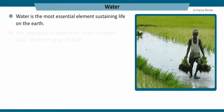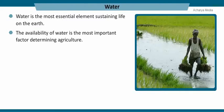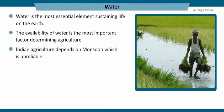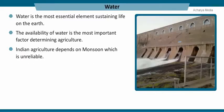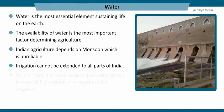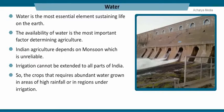Water is the most essential element sustaining life on earth. The availability of water is the most important factor determining agriculture. Indian agriculture depends on the monsoon, which is unreliable, and rainfall distribution is uneven in India. Irrigation cannot be extended to all parts of India, so crops that require abundant water grow in areas of high rainfall or under irrigation. To meet the food requirements of the growing population, dry crops are grown in areas of low rainfall.